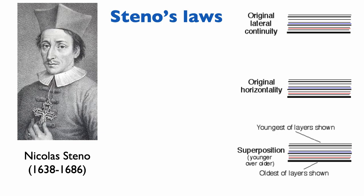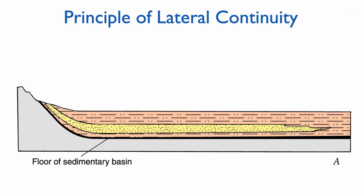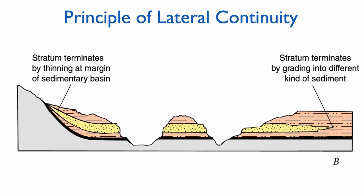Steno's third principle is the principle of original lateral continuity. When layers were deposited they were continuous laterally — you could follow them to the edge of the basin. Today, sediments are cut by valleys and rivers and can no longer be traced. But Steno recognized this as a feature of the modern landscape, introducing the notion that we could do correlation — tracing rocks in space if not in time. Of course, this principle has its limitations, as layers are not infinite in space.